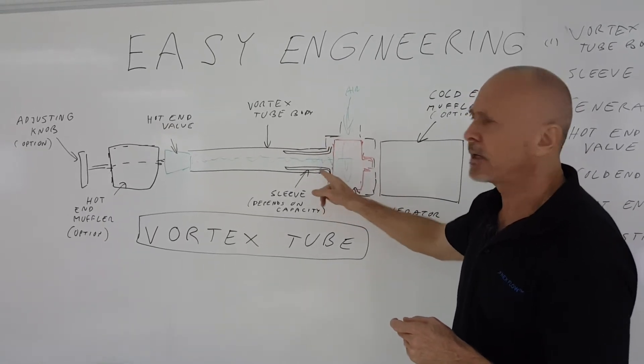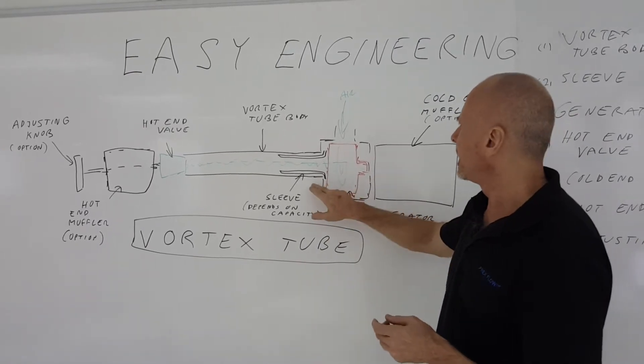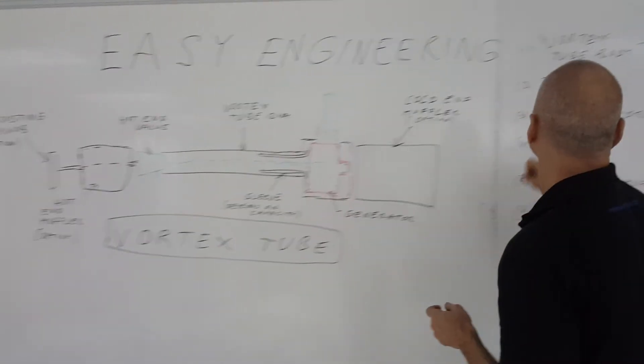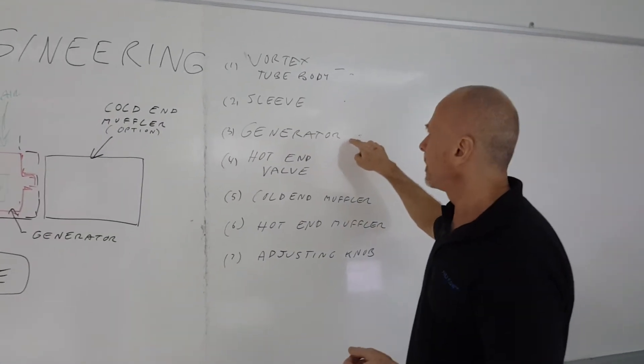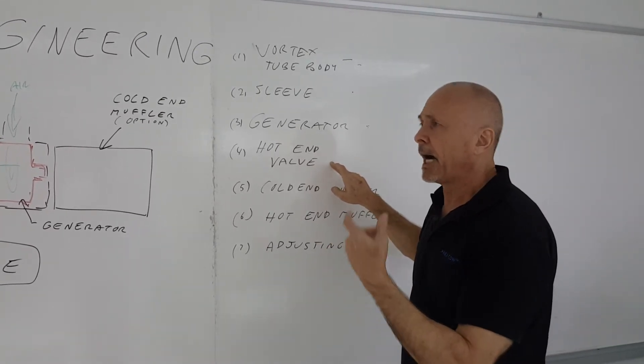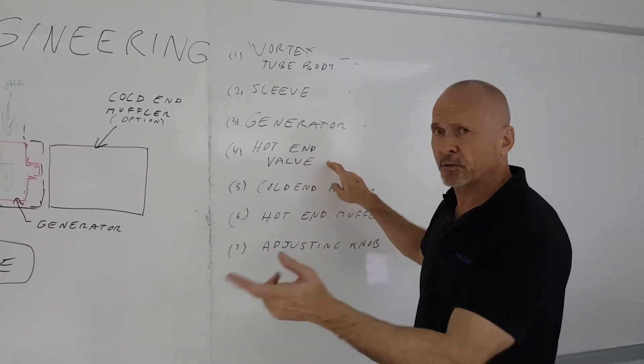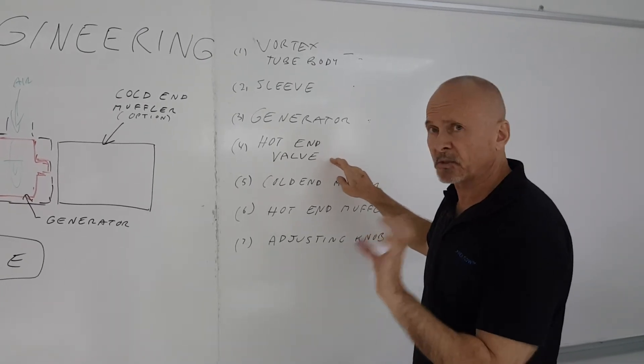So sometimes you'll see a sleeve on the inside, but not in all capacities. You don't always need it. But so you have the body, then you have of course the generator as well after the sleeve, the generator that does all the spinning in the air. You have the hot end valve to control the air coming out at that end of the Vortex 2 to control the flow and the temperature, which we'll explain in the next video.